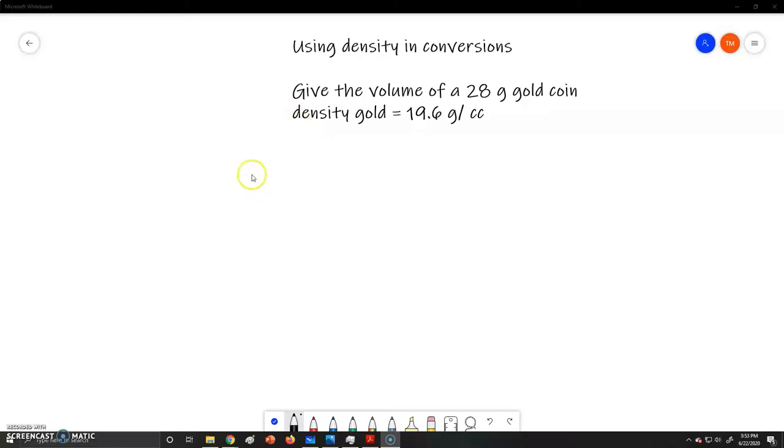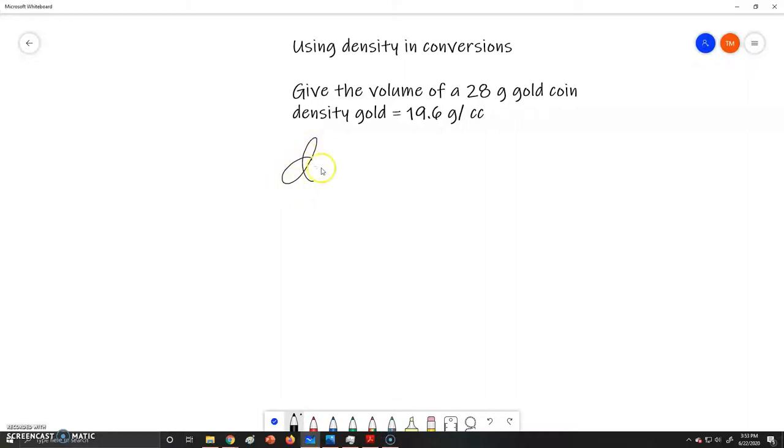Using Density in a Conversion Problem. Density is a derived unit that is found by taking the mass divided by the volume. This could be any mass or any volume used of an object to find its density.